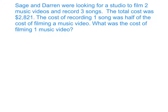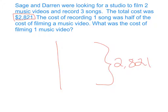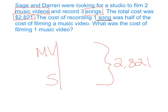There's a lot of information in this problem. Here's what we know: the total cost was $2,821. So here's my starting line, and for my bracket I know I need $2,821 — that's my total. The other piece of information we know is that they want to film music videos and record songs. Those are my labels: MV for music video, and S for song.